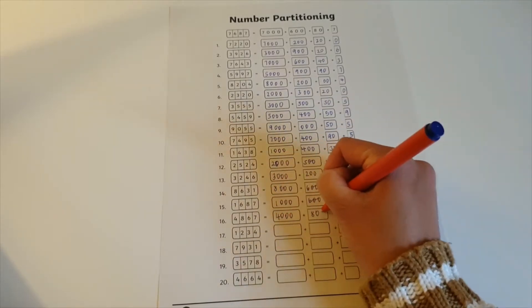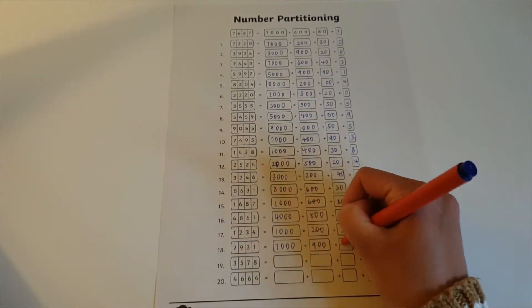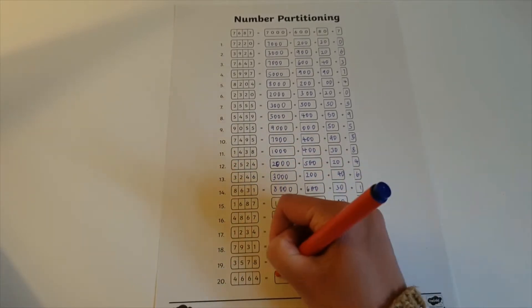Partitioning numbers allows us to separate large numbers into smaller series of digits. Partitioning allows children to see the different values between digits.